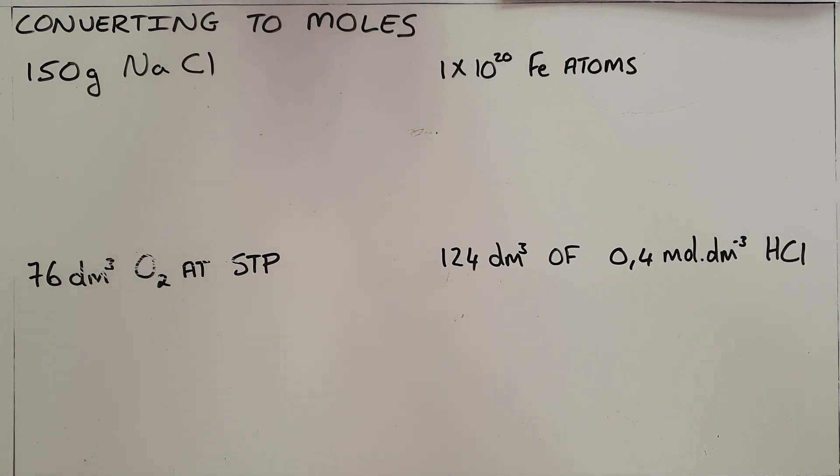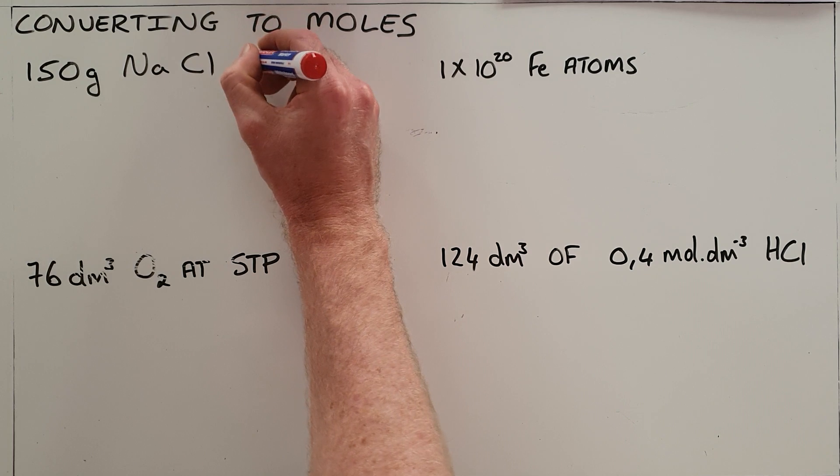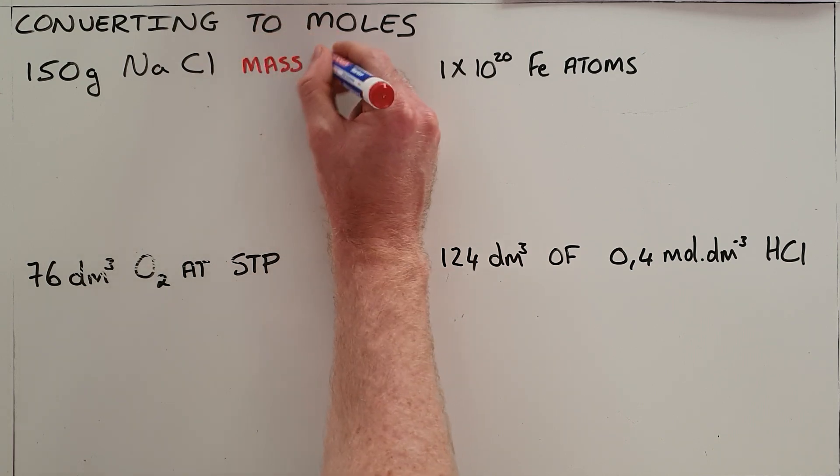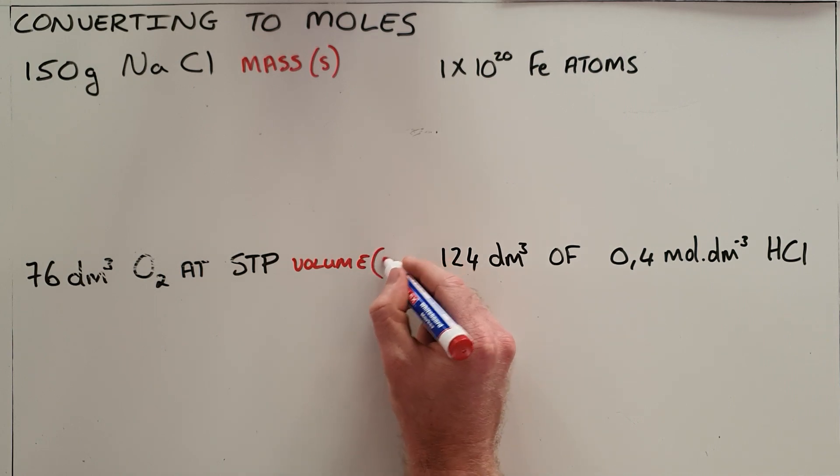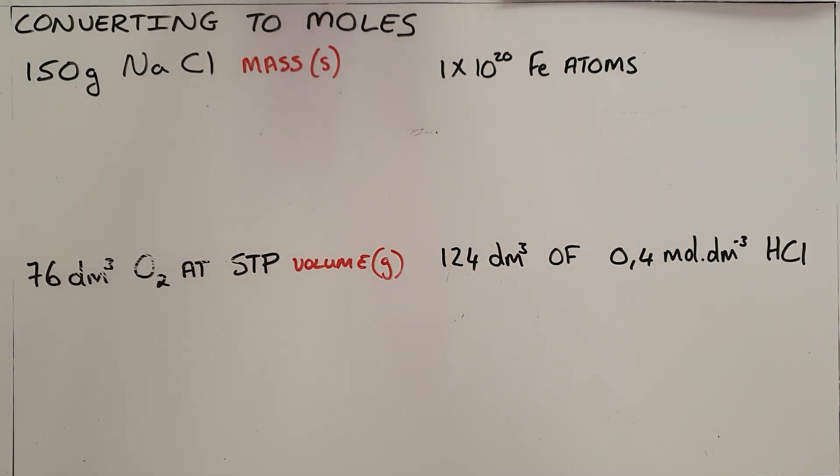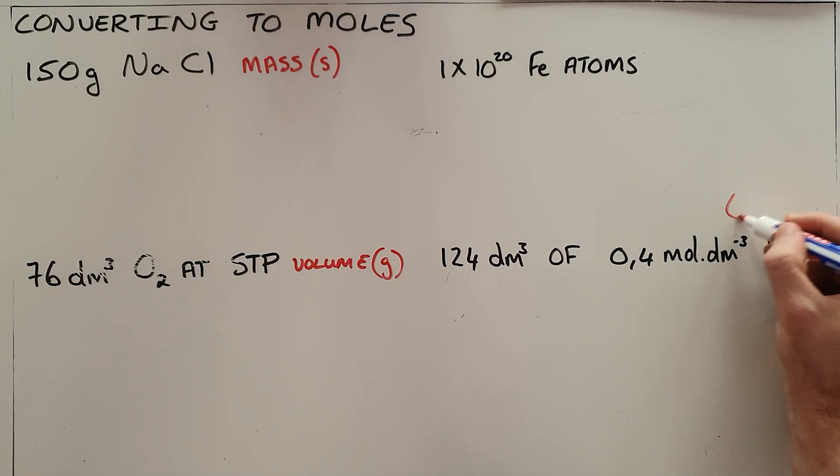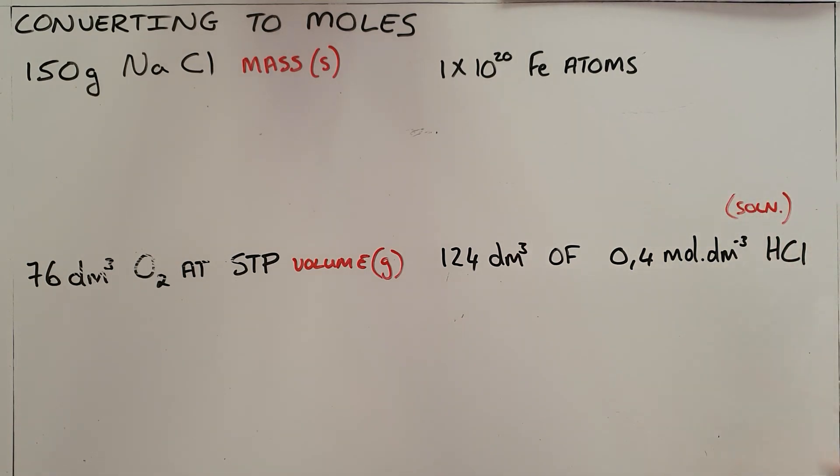There are normally four ways in which amount of substance is given to us: as a mass of substance, which is usually for solids; as a volume of substance, which is most of the time for gases; as a concentration and volume, which is for solutions; and occasionally as a specific number of atoms, which you can convert to a number of moles.